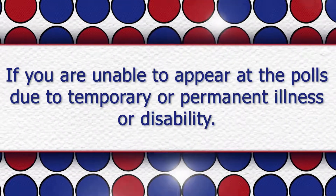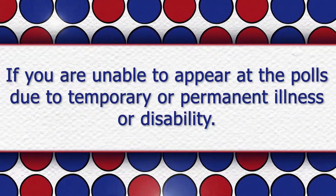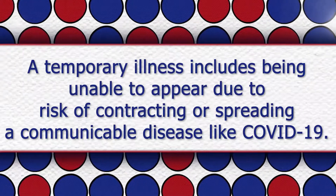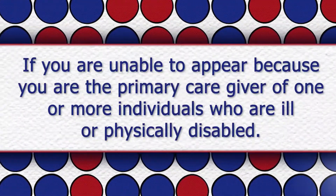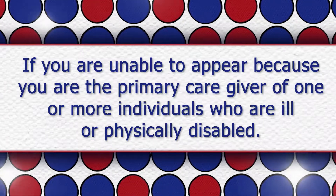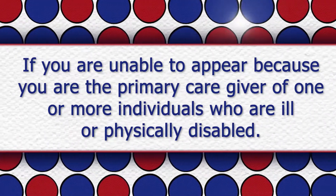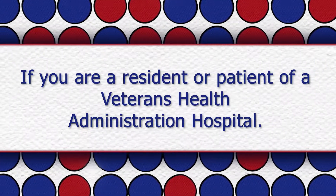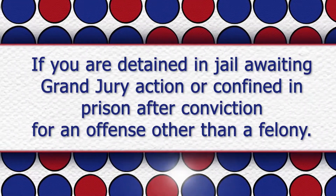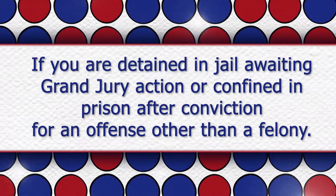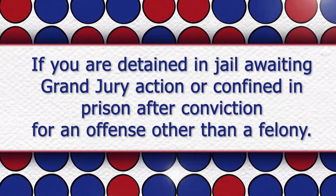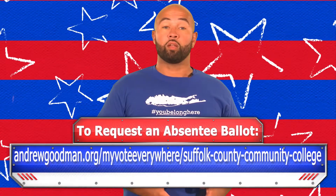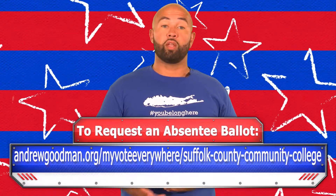If you're unable to appear at the polls due to a temporary or permanent illness or disability — a temporary illness includes being unable to appear due to a risk of contracting or spreading a communicable disease like COVID-19 — if you're unable to appear because you are the primary caregiver of one or more individuals who are ill or physically disabled, if you are a resident or patient of a Veterans Health Administration Hospital, or if you are detained in jail awaiting grand jury action or confined in prison after a conviction for an offense other than a felony. To request an absentee ballot, just go to our Andrew Goodman Foundation website. Make sure you read all the instructions before submitting your request.